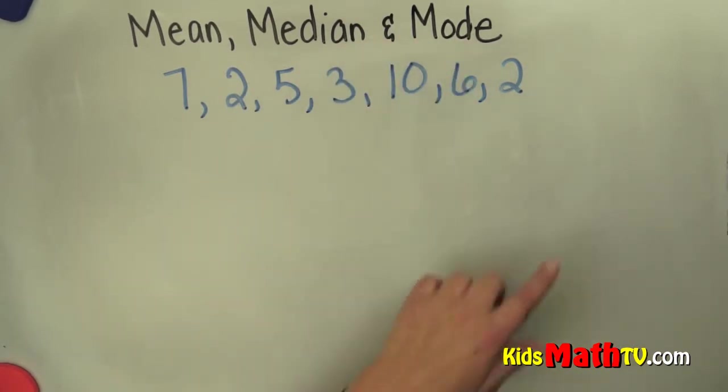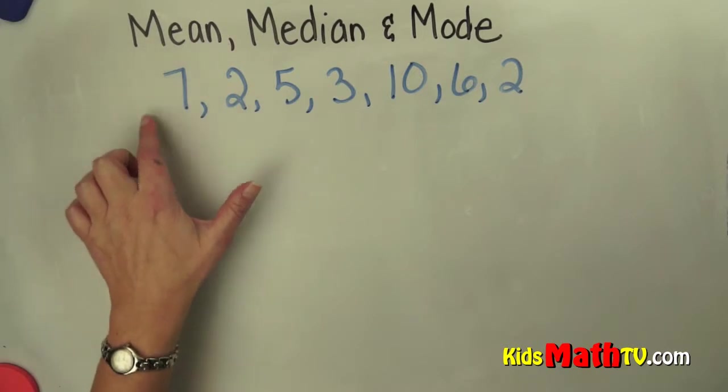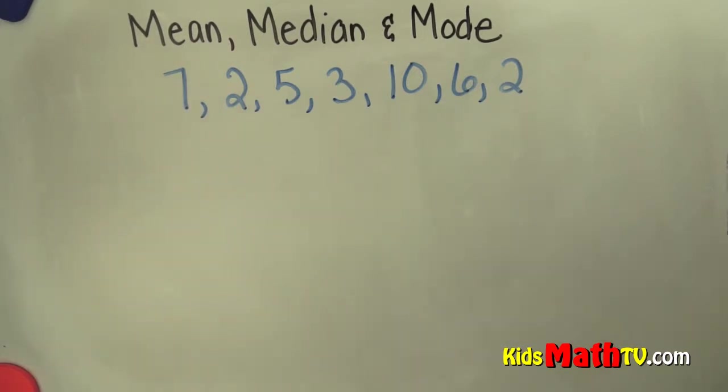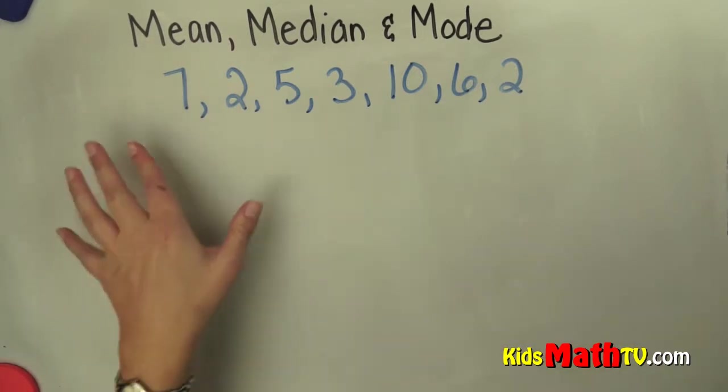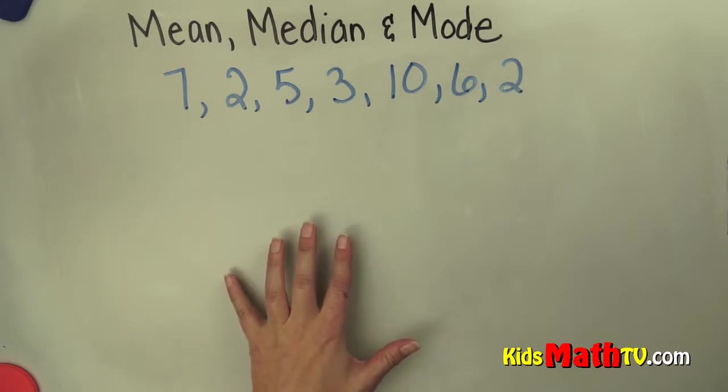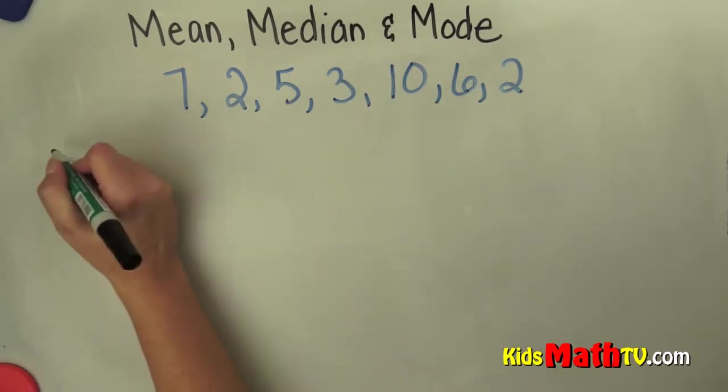Here we have a set of numbers, and to find the mean we simply add these numbers together and then divide by the number of items in the set. So first we add them together.